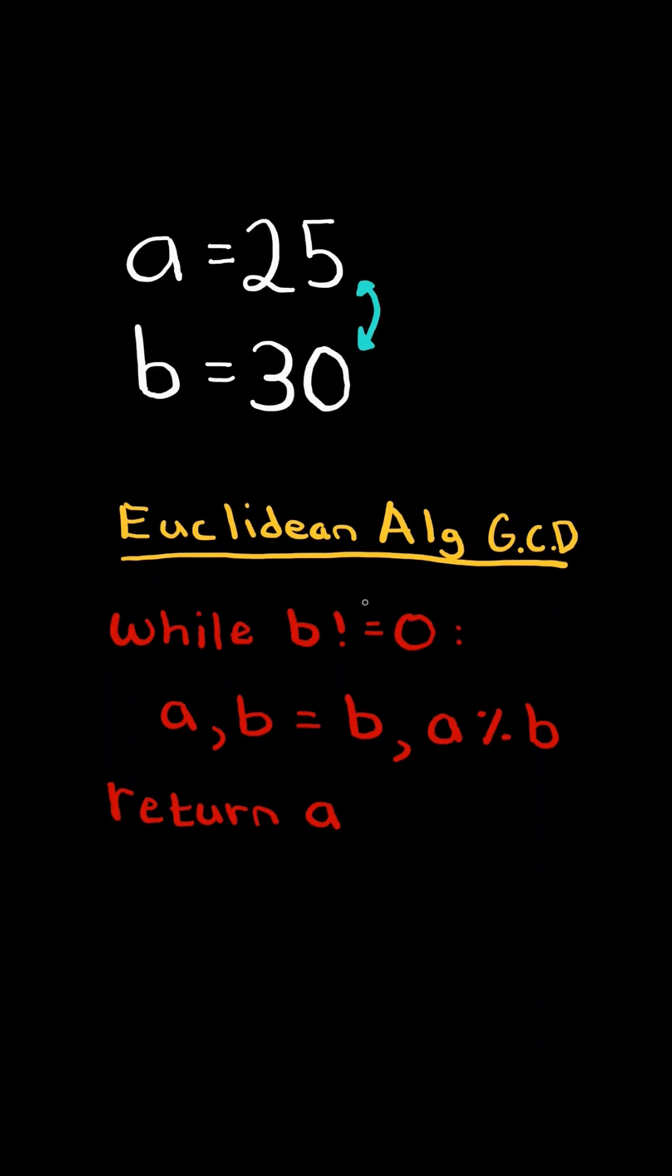In order to run the Euclidean algorithm, a has to have the larger number, so in this case we swap a and b.